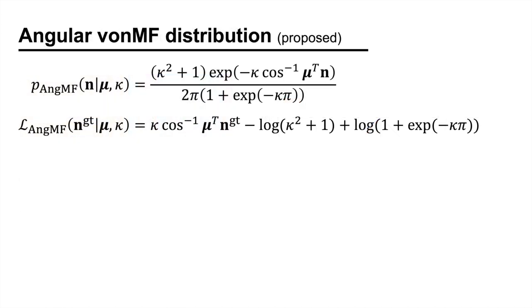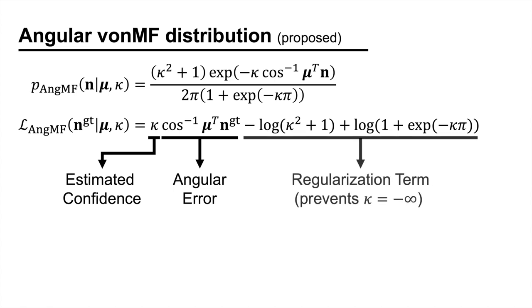We therefore introduce a variant of the von Mises-Fischer distribution. Here are the probability density function and the corresponding training loss. Instead of minimizing the L2, we minimize the angular error. The loss is weighted by the confidence, and there is a regularization term.